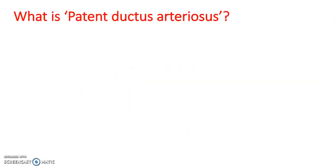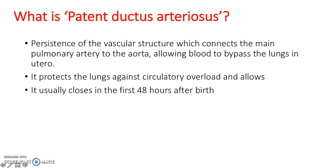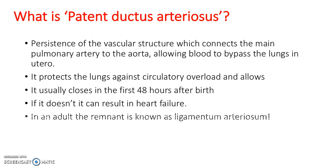What is a patent ductus arteriosus? A patent ductus arteriosus, or PDA, is the persistence of the vascular structure which connects the main pulmonary artery to the aorta, allowing blood to bypass the lungs in utero. It protects the lungs against circulatory overload, and it usually closes in the first 48 hours after birth. If it doesn't, it can result in heart failure. In an adult, the remnant is known as ligamentum arteriosum.